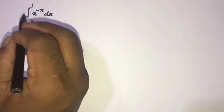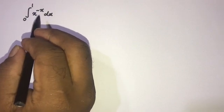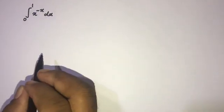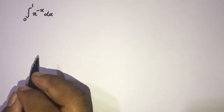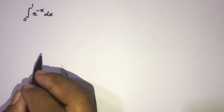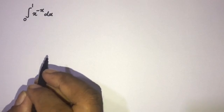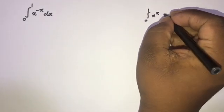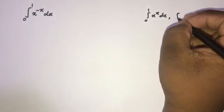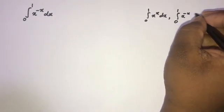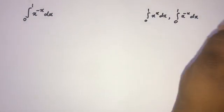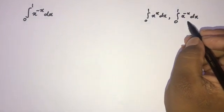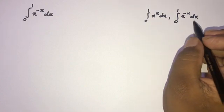Hi, welcome to the Mathematics MI channel. Today we are going to solve another interesting integral: the integral from 0 to 1 of x to the minus x dx. Before solving this question, what is the sophomore's dream? In mathematics, the sophomore's dream is the pair of these two integrals: the integral from 0 to 1 of x^x dx and the integral from 0 to 1 of x^(-x) dx. Generally, this integral is called the sophomore's dream.